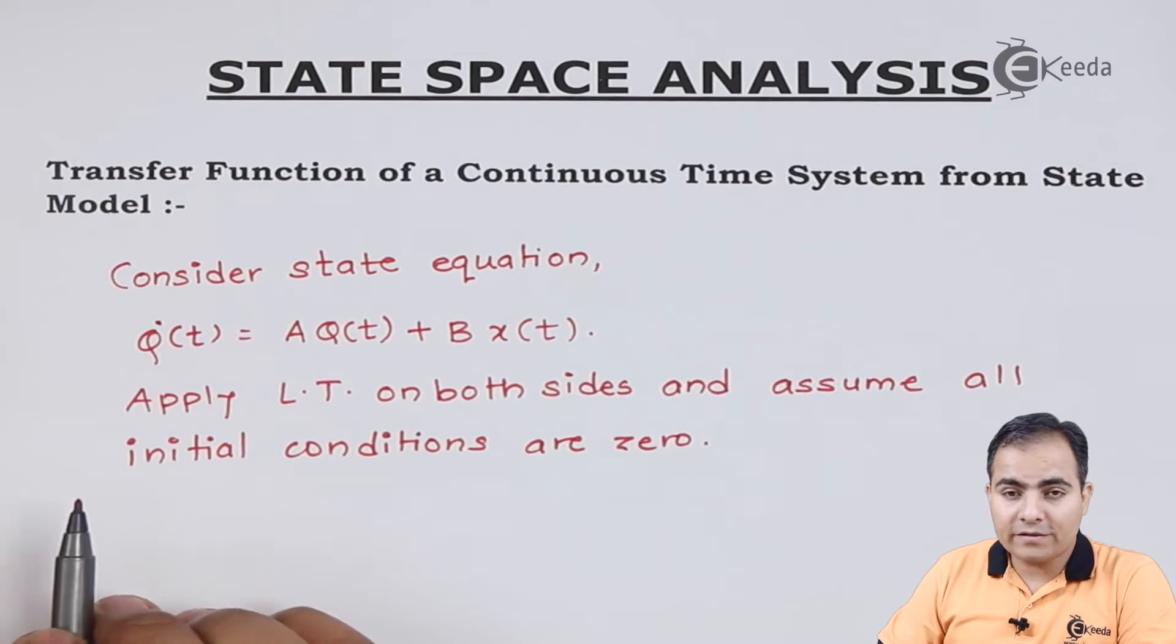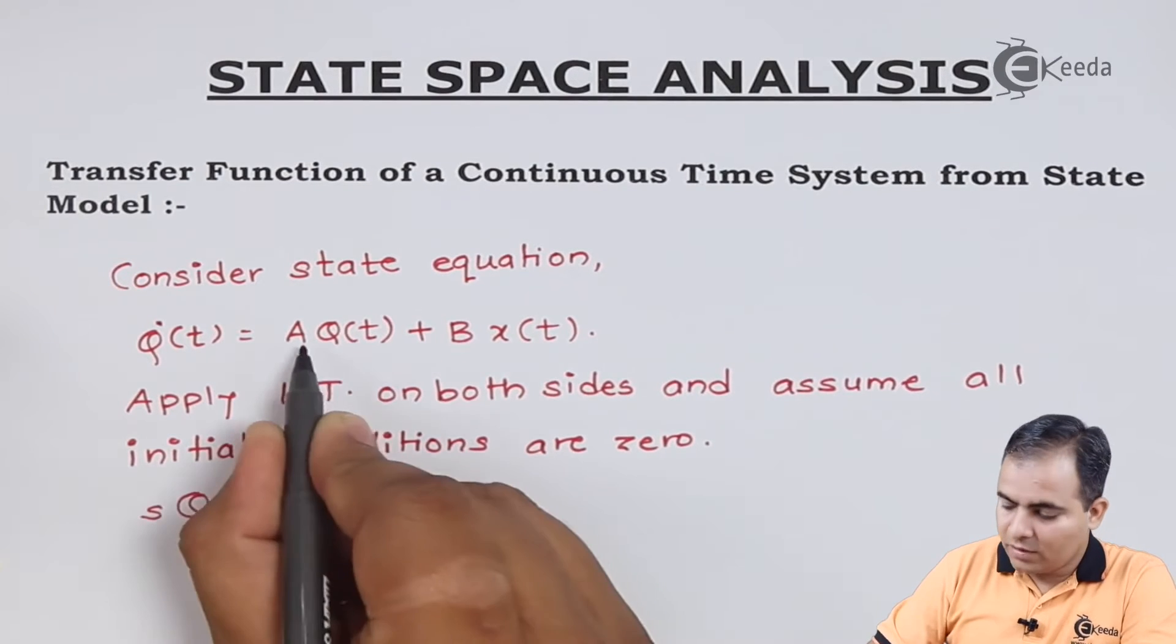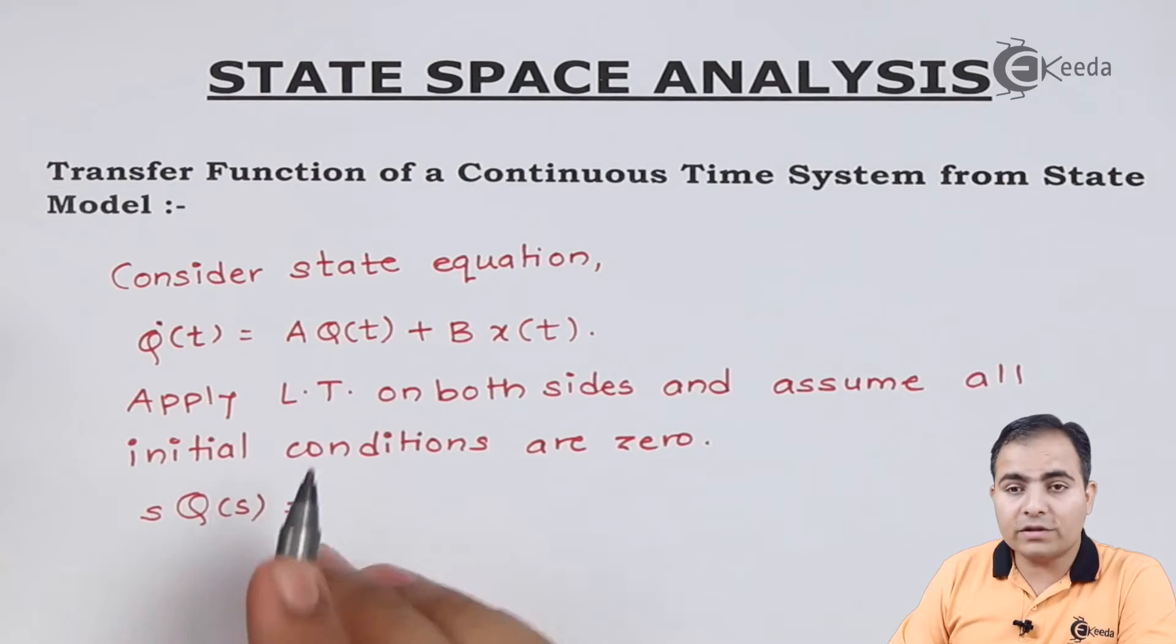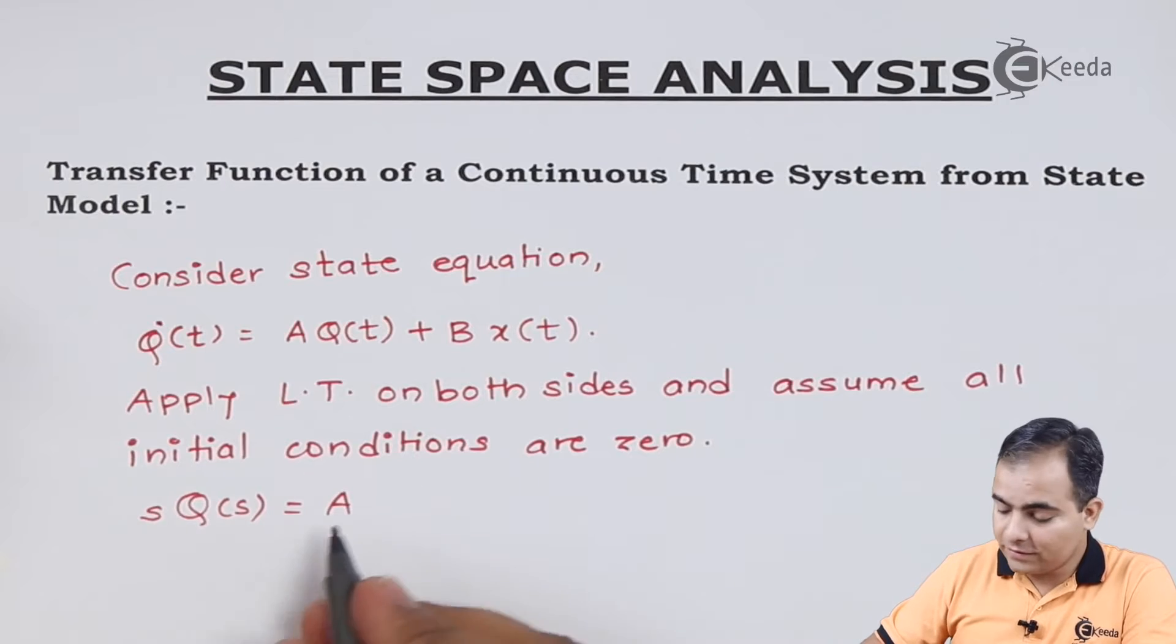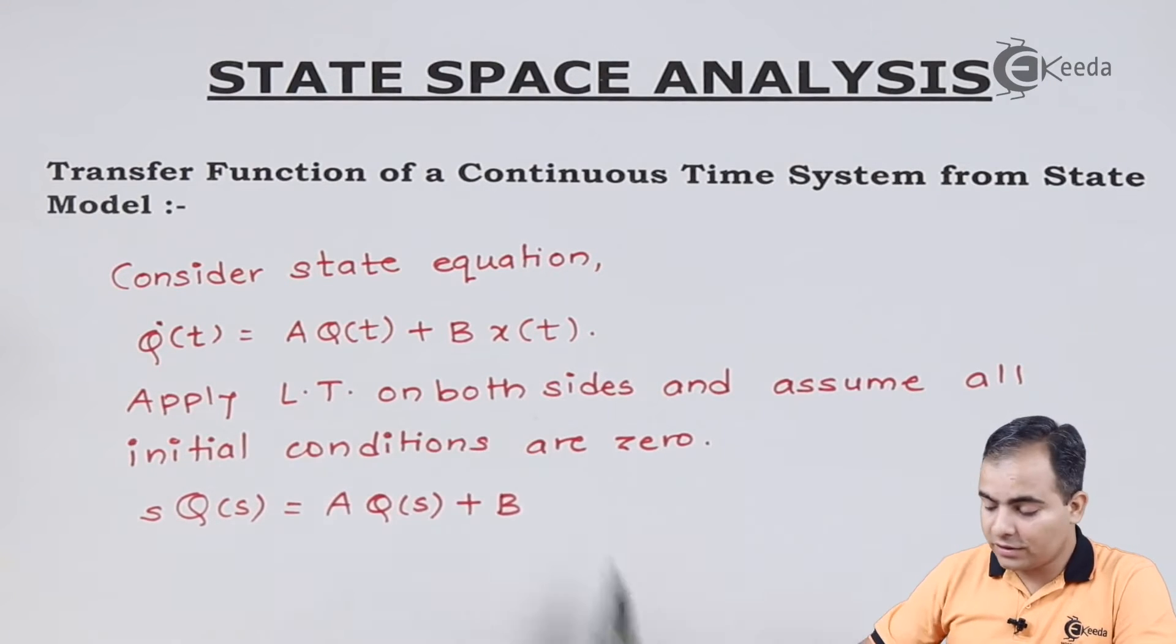Q' of t Laplace transform is sQ of s. Q of t Laplace transform is Q of s where my A and B both are constants so we will write outside first. Q of t Laplace transform is Q of s. Again here B is also constant and X of t Laplace transform is X of s.